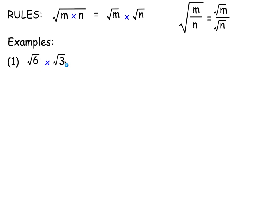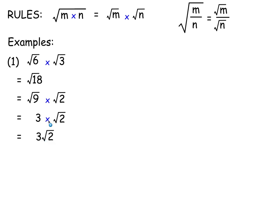Here's an example: root 6 times root 3 is root of 6 times 3, that's root 18 — using the rule from right to left. Equally, you could write root 18 as root 9 times root 2, using the rule left to right. The square root of 9 is not a surd because that's exactly 3. So this is 3 times root 2, written in short form as 3 root 2.